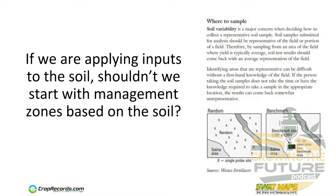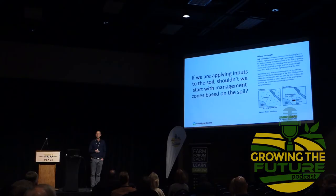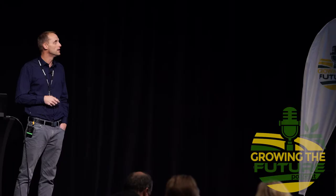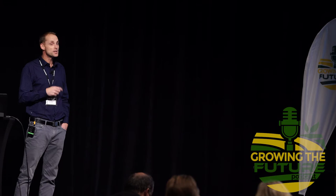Our philosophy is: if our goal is to apply inputs to the soil — whether that's fertilizer, soil-applied herbicides, or an amendment like lime or gypsum — we kind of should be starting with soil-based management zones. What should they be based on? Probably three main things, all interrelated: soil — topsoil depth, organic matter, salinity, and different textures like sands versus clays, which provide nutrients to the crop in different capacities and need to be managed very differently.